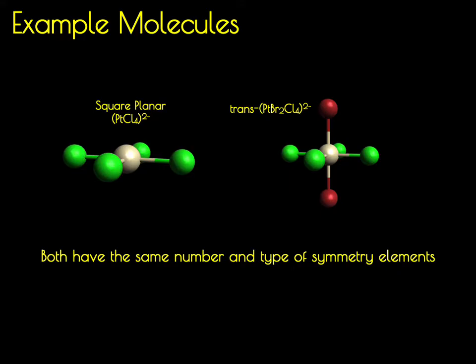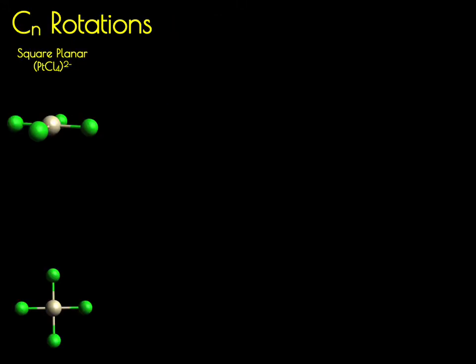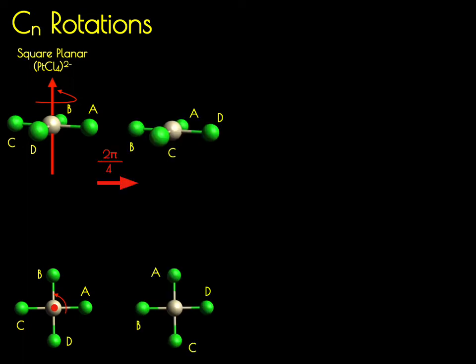We're going to start with the platinum tetrachloride square planar molecule and look at proper rotational axes. I've given you two different perspectives of this molecule so you can more easily see how these rotations are affecting the different atom positions. I'm going to label the chlorines A, B, C, and D, and place our rotational axis as a red arrow with the counterclockwise rotational vector. We can do a 2π over 4 rotation, which puts A into B's place, B into C, C into D, and D into A. Because the denominator is 4, this is a C4 rotation.